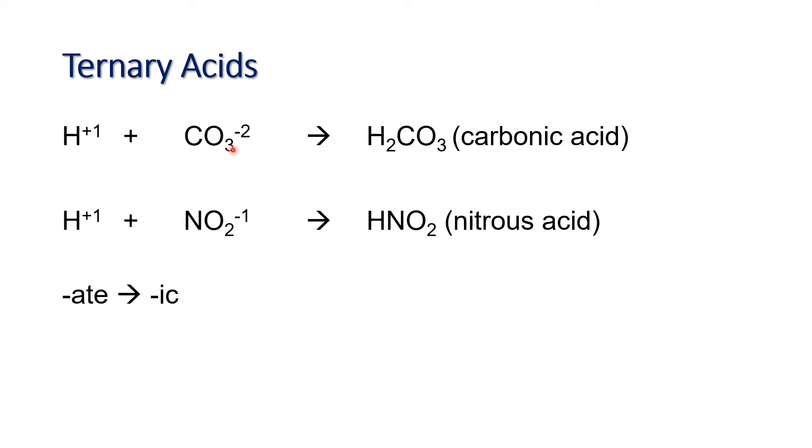For example, if we use carbonate, we will change the last three letters of ATE into IC. So, from carbonate, it becomes carbonic and then we add the word acid. And as for the polyatomic anions that end with ITE like nitrite, we change the ITE into OUS to make it nitrous acid. Another example would be chlorite; if we combine it with hydrogen ion, we form chlorous acid. Another one would be if we combine hydrogen ion with acetate, we form acetic acid. That is how we name ternary acids.